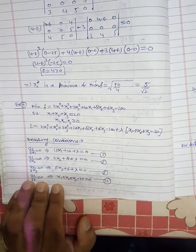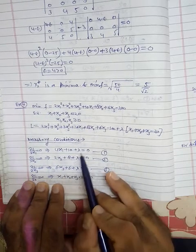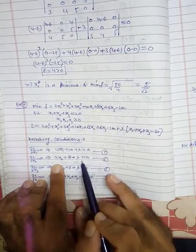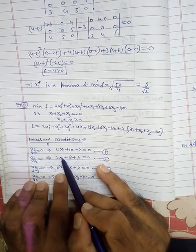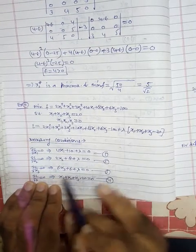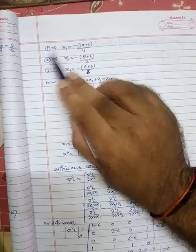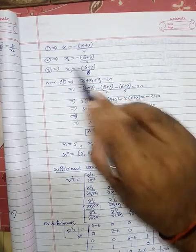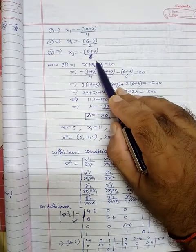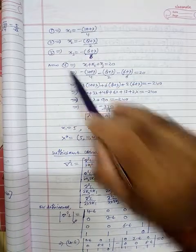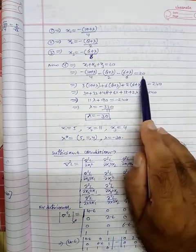Now we find lambda. From the first equation, express x₁ in terms of lambda. From the second equation, express x₂ in terms of lambda. From the third equation, express x₃ in terms of lambda. Then substitute x₁, x₂, x₃ into the fourth equation (x₁ + x₂ + x₃ = 20) to find lambda.